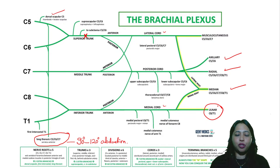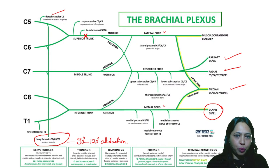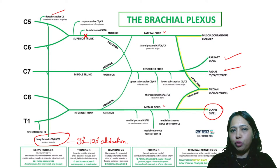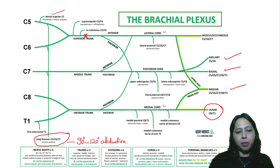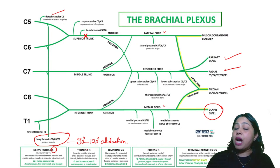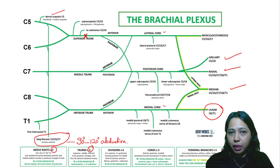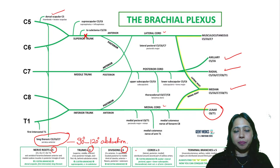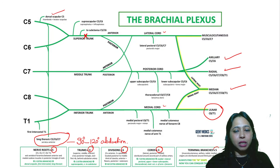To remember the brachial plexus structure: five nerve roots, three trunks, six divisions, three cords, five terminal branches. You can remember this as 5-3-6-3-5. The mnemonic is: 'Are You Tired? Drink Coffee Buddy' — roots, trunks, divisions, cords, branches.